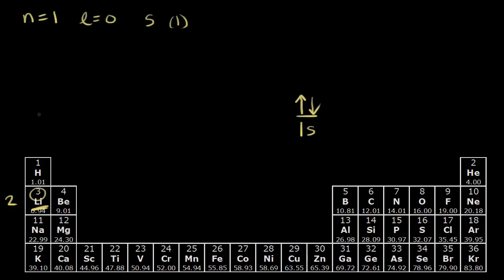Writing the electron configuration for lithium — we have one s two so far. Lithium has three electrons, but the first shell is full, it's closed. So we have to move on to the second shell to add lithium's third electron. In the second shell, n is equal to two.